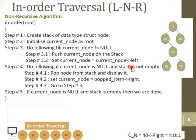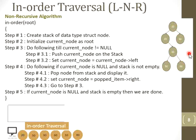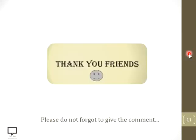Here you can see that no more elements are available in the stack. Both conditions — current node is null and stack is empty — are true, which indicates that we have completed the in-order traversal. So the in-order traversal for the given tree is: 20, 50, 30, 60, 10, and 40. In this way, we have done with the in-order traversal of the given binary tree using the non-recursive algorithm. Thank you dear friends. I hope you have understood how to dry run the non-recursive algorithm for in-order traversal of a given binary tree.